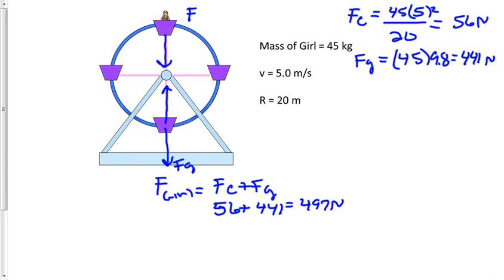At the top, the force acting on the girl equals force of gravity minus force centripetal. I'll take 441 and subtract 56, and that's 385 newtons.